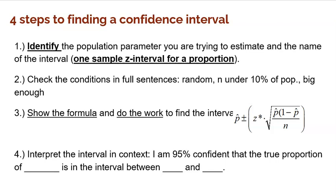Just to briefly remind you of the steps for doing a confidence interval. You can't skip these steps, especially on an FRQ, but on multiple choice sometimes you just need to find the interval. Step one: identify the population parameter you're trying to estimate and name the procedure as a one sample z interval for a proportion. They love it when you name the procedure. You've got to check those conditions of course. Then show the formula and do the work, but I'm going to teach you how the calculator can do all that work for you. And don't forget step four: interpret the interval in context.